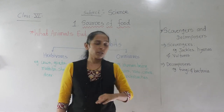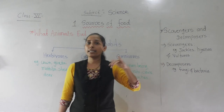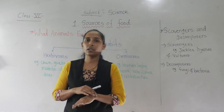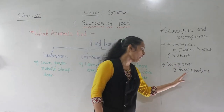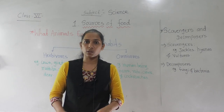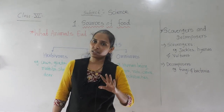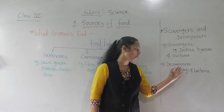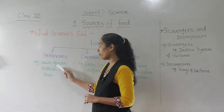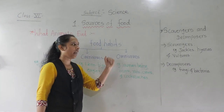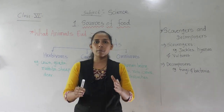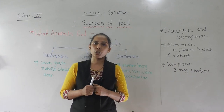Next, we also sometimes eat fungi — for example, mushrooms. Mushrooms are an example of fungi; they are neither a plant product nor an animal product. Fungi is a separate category. Some fungi are edible while some are poisonous. So, based on food habits, animals are divided into three main groups: herbivores, carnivores, and omnivores, and we also have scavengers and decomposers that help clean the earth. This is all for today's lesson — the next point will continue in the next lecture. Thank you.